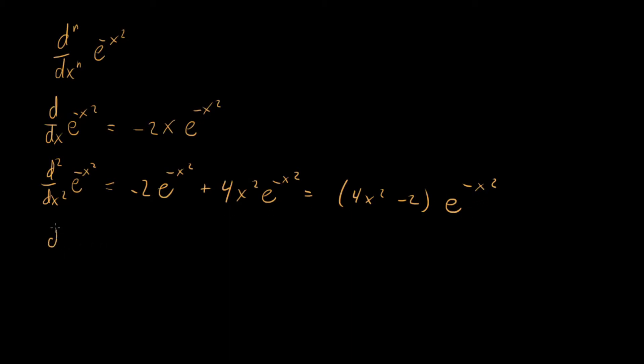What about a third derivative? Well, a third derivative, we just take the derivative of this guy right here. And what do we get? Well, we're going to get, and it's going to be a little painful. So we're going to have a product rule. Our first term, we're going to get 8x times e to the minus x squared plus, and then we're going to have minus 2x times 4x squared minus 2 e to the minus x squared. And this whole thing right here is equal to minus 8x cubed minus 12x e to the minus x squared.